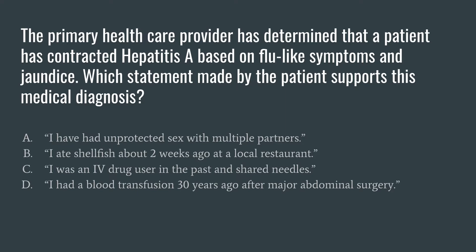Before we move on to the answer options, let's brainstorm. What do we know about hepatitis A? We know it is a viral infection of the liver. When we think about transmission modes for hepatitis A, it is a fecal-to-oral route. So oftentimes, people will get it from undercooked food, undercooked seafood, or from an infected food handler who may pass it along that way.